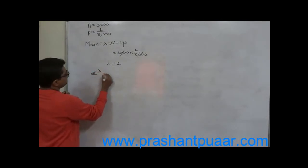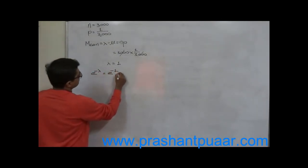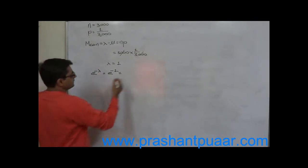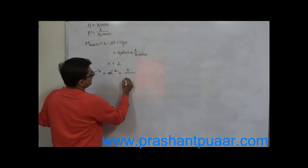The value can be obtained from the table, or otherwise it is 1 upon e raise to 1, that means 1 upon 2.71828.